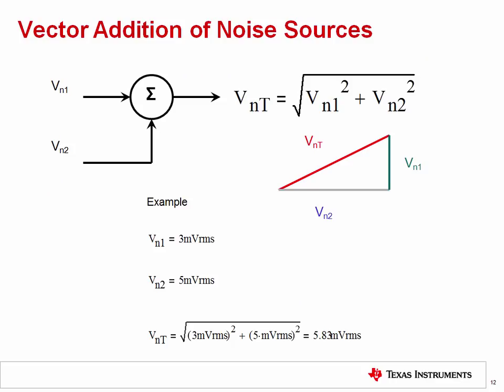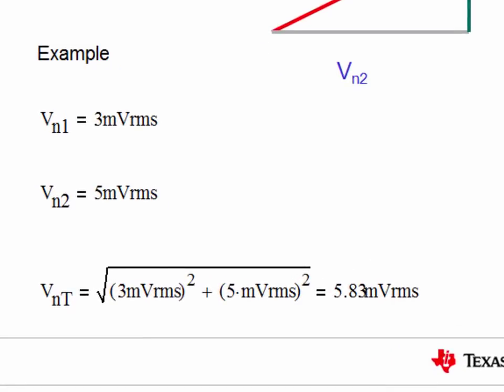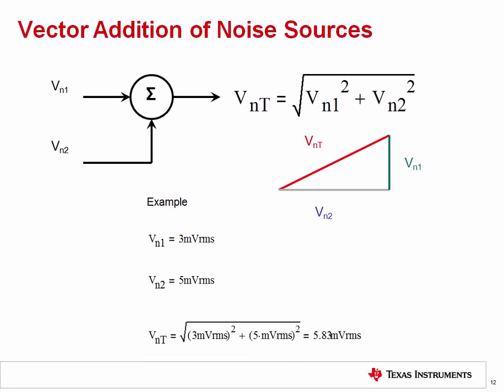An important concept in noise analysis is adding noise values. Noise cannot be added algebraically, for example, 3 plus 5 equals 8. Noise must be added as a vector, as shown here, where we take the square root of 3 millivolts RMS squared plus 5 millivolts RMS squared for a result of 5.83 millivolts RMS. It is important to note that this relationship applies only to uncorrelated random noise. If the noise source is correlated, a different formula applies.